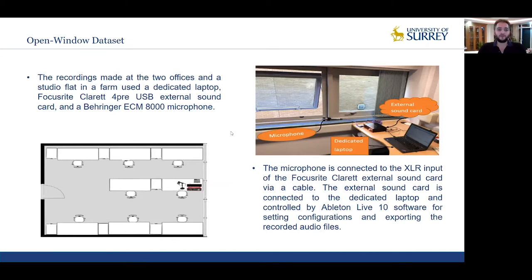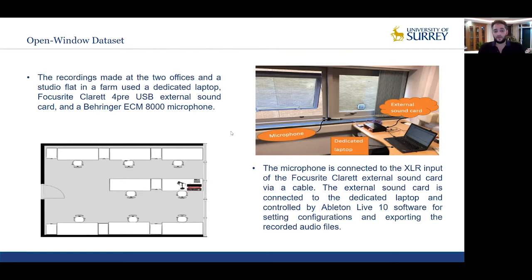The recordings made at the two offices were done on the Storio platform. For recordings, we used a dedicated laptop, an external sound card, and a high quality microphone. As shown in the right-hand figure, the microphone is connected to the XLR input of the external sound card via a cable. The external sound card is then connected to the dedicated laptop and controlled by Ableton Live 10 software for setting configurations and exporting the recorded audio. The microphone is located approximately 10 cm away from the window and fixed using a microphone holder. The left-hand figure shows the pan view of the Office 2 location.